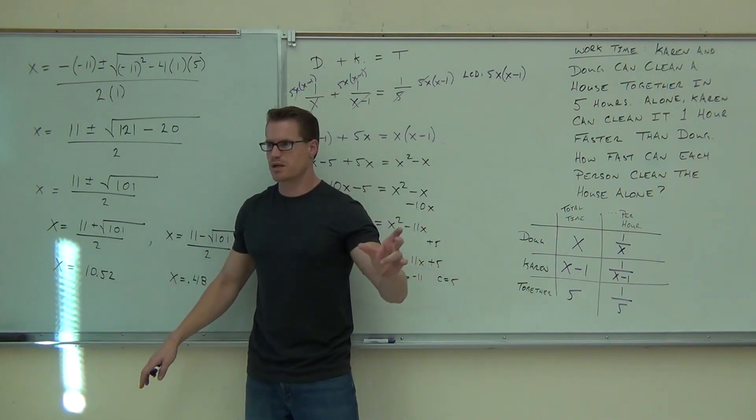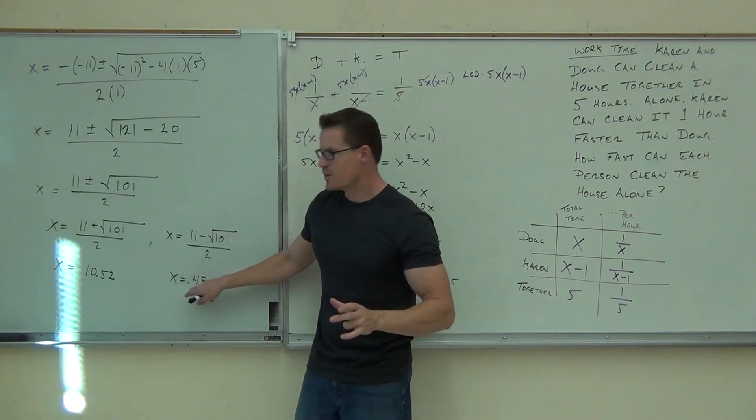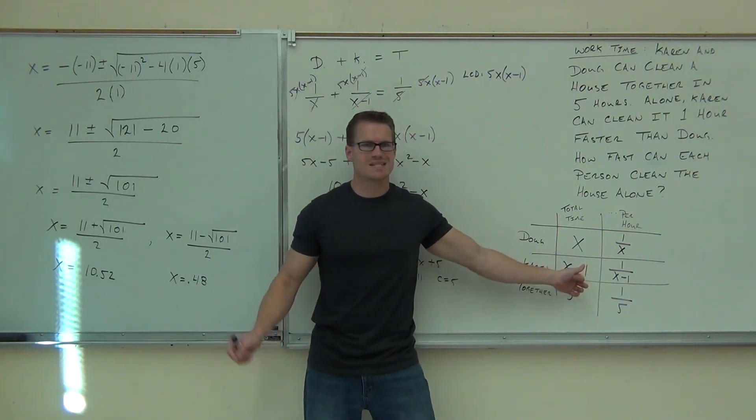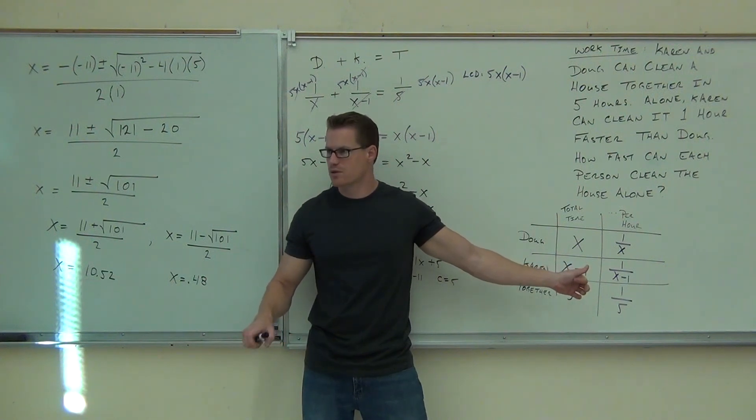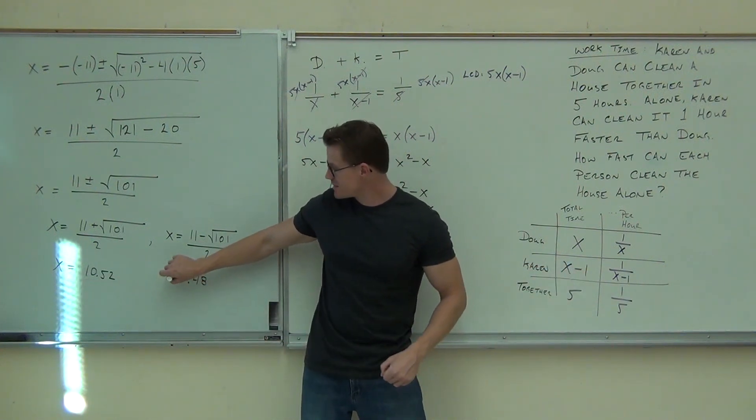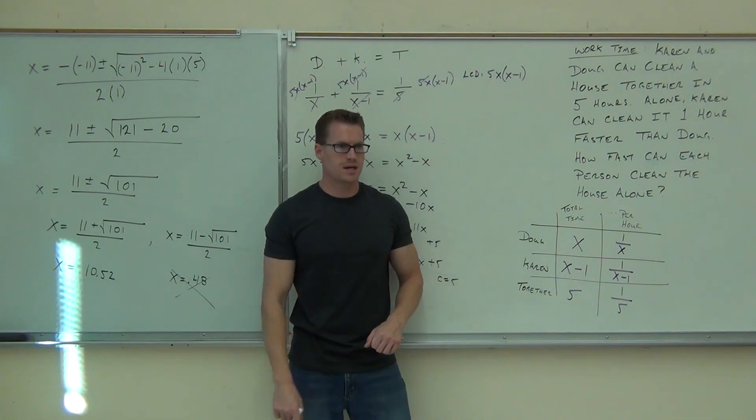Karen would be x minus 1, yeah? If you take this and do x minus 1, you have 0.5 minus 1, that's negative half an hour. Is that going to work for us? And this solution really doesn't count for us. It really doesn't count.